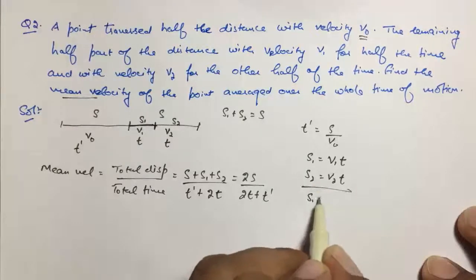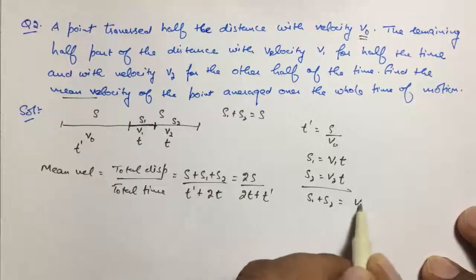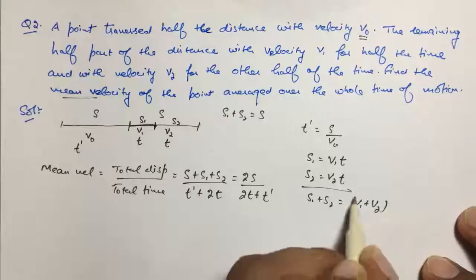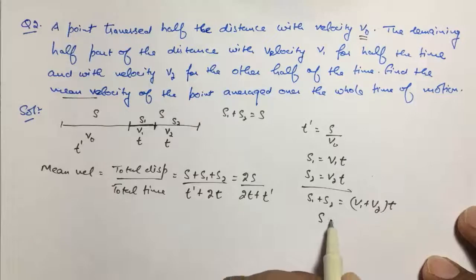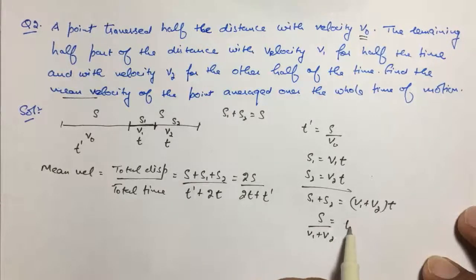S₁ plus S₂ equals (V₁ plus V₂) times T. And S₁ plus S₂ is again equal to S, so S upon (V₁ plus V₂) equals T.